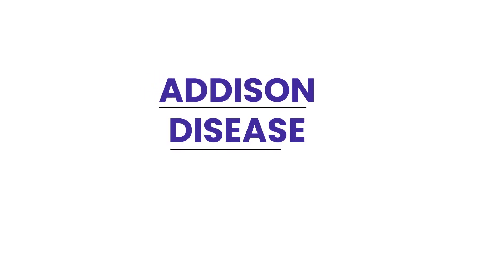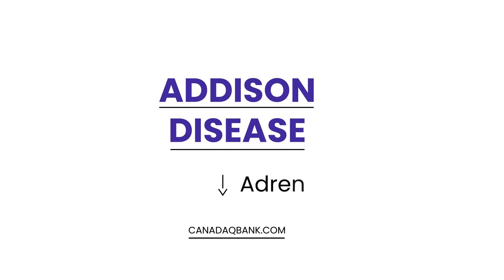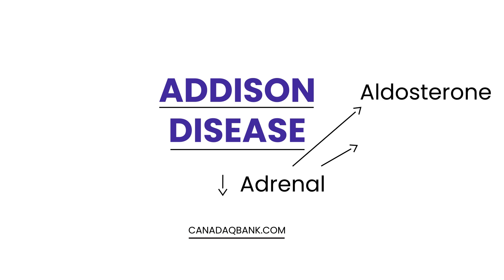Addison's disease is the topic for this video. Addison's disease is basically when the adrenal gland is not functioning properly, usually because of destruction. The two hormones we're going to discuss are aldosterone and cortisol. In Addison's disease, you have a deficiency of the adrenal gland, so you'll have low levels of these hormones.